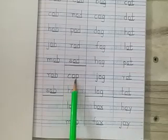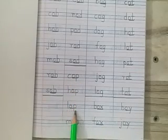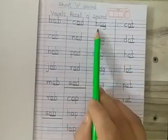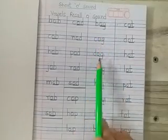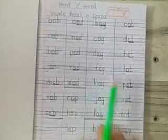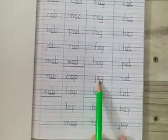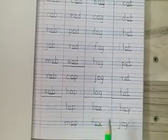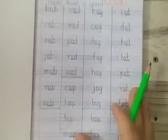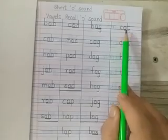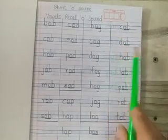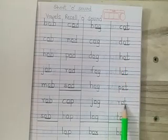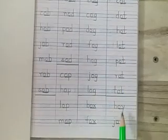OP words: COP, HOP, LOP, MOP. OG words: BOG, COG, DOG, FOG, HOG, JOG, LOG. OX words: BOX, FOX. OT words: COT, DOT, HOT, LOT, POT, ROT, TOT.